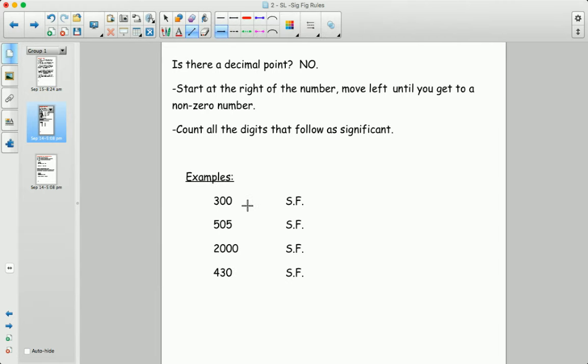and again count once you hit a non-zero digit. So in this case the first one you don't hit a non-zero number until you get to the three. So there's only one sig fig in the number 300. In this one there's three. In this one there's one and in this one there are two.